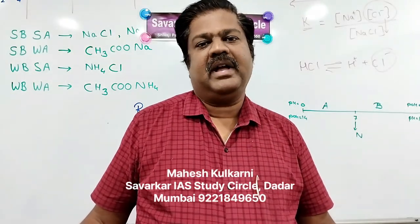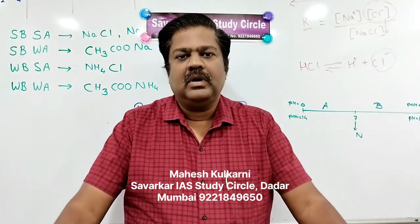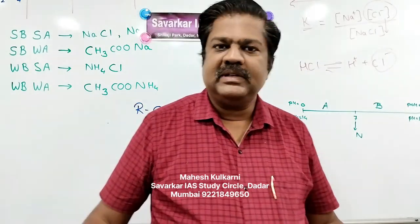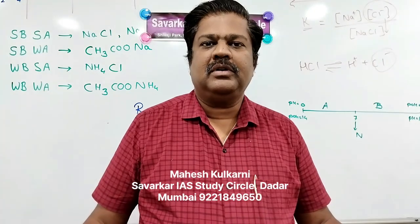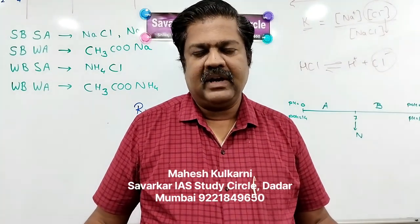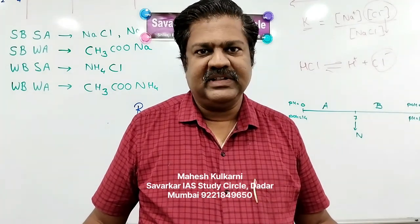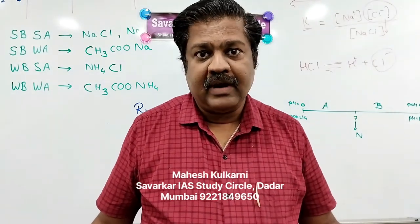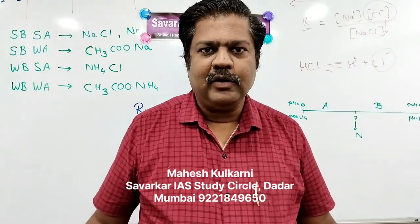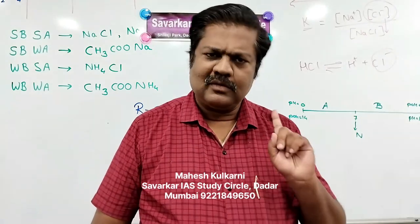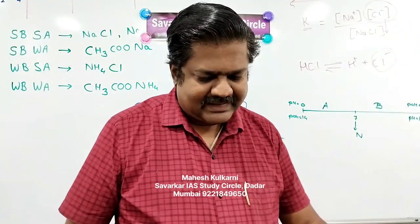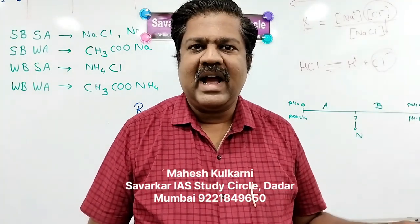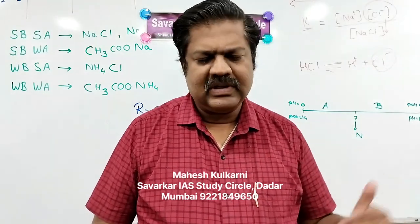Haber's process is the conversion of atmospheric nitrogen into ammonia by reacting it with hydrogen. This is an industrial process, discussed particularly in 11th standard science stream when studying Le Chatelier's principle. This process was also very helpful for Hitler during the Second World War. The ornithine cycle takes place in our body to convert ammonia into urea, so it is not the right answer.